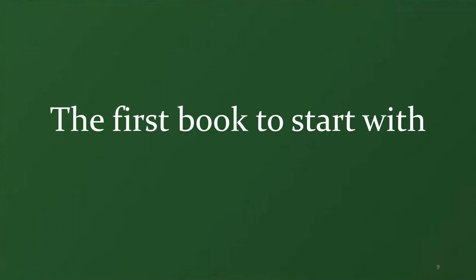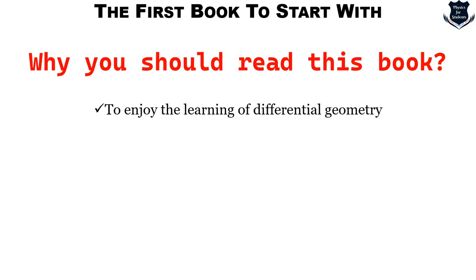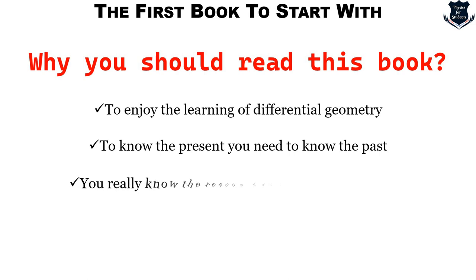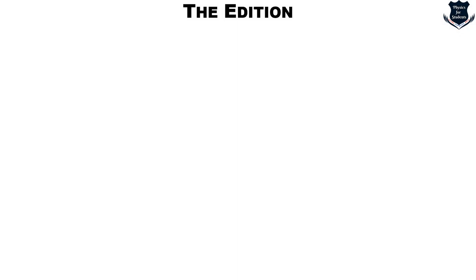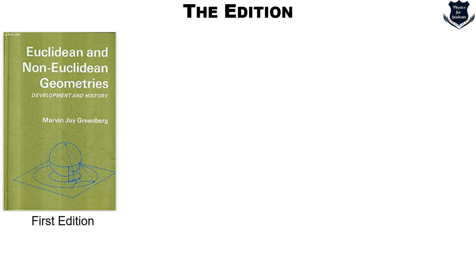Before mentioning the book we should know the objective. To enjoy learning differential geometry, we need to know a little bit about the past — the reason why those theorems came — and once you know that reason the learning becomes much more effective. So this is why you should read this book: to know the present, to understand where theorems come from, so that understanding becomes fun. The book is called Euclidean and Non-Euclidean Geometries: Development and History by Marvin J. Greenberg.